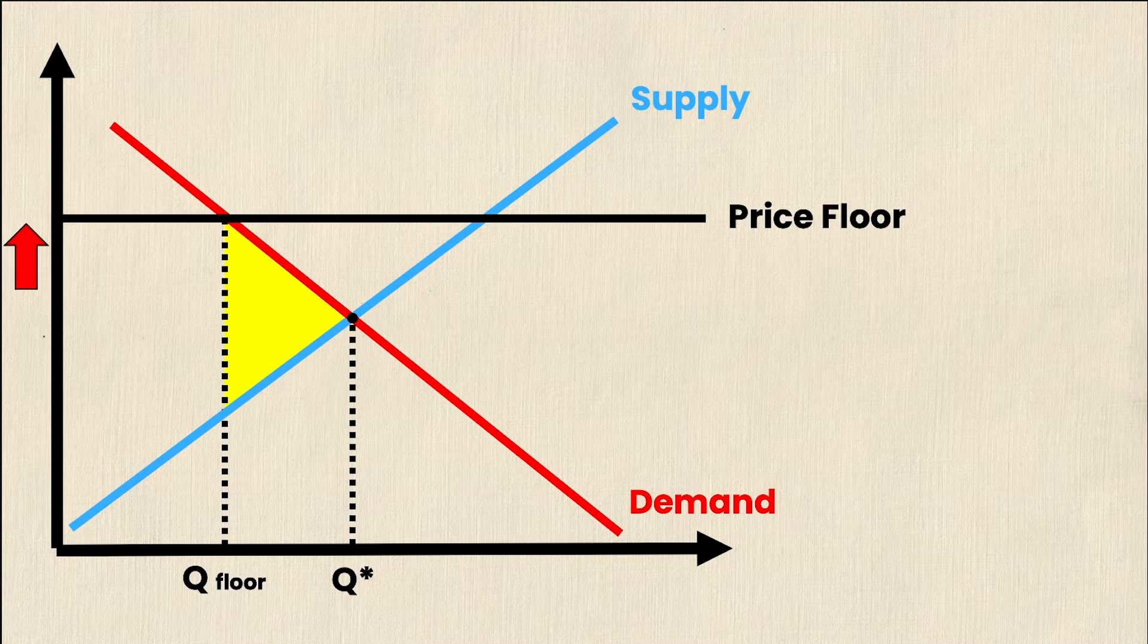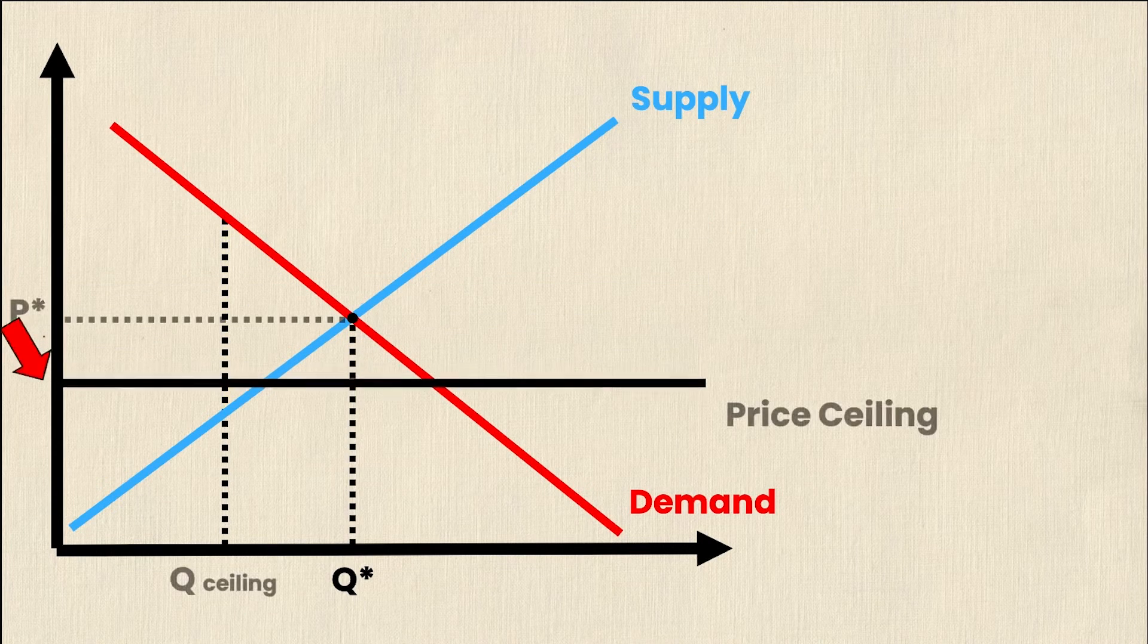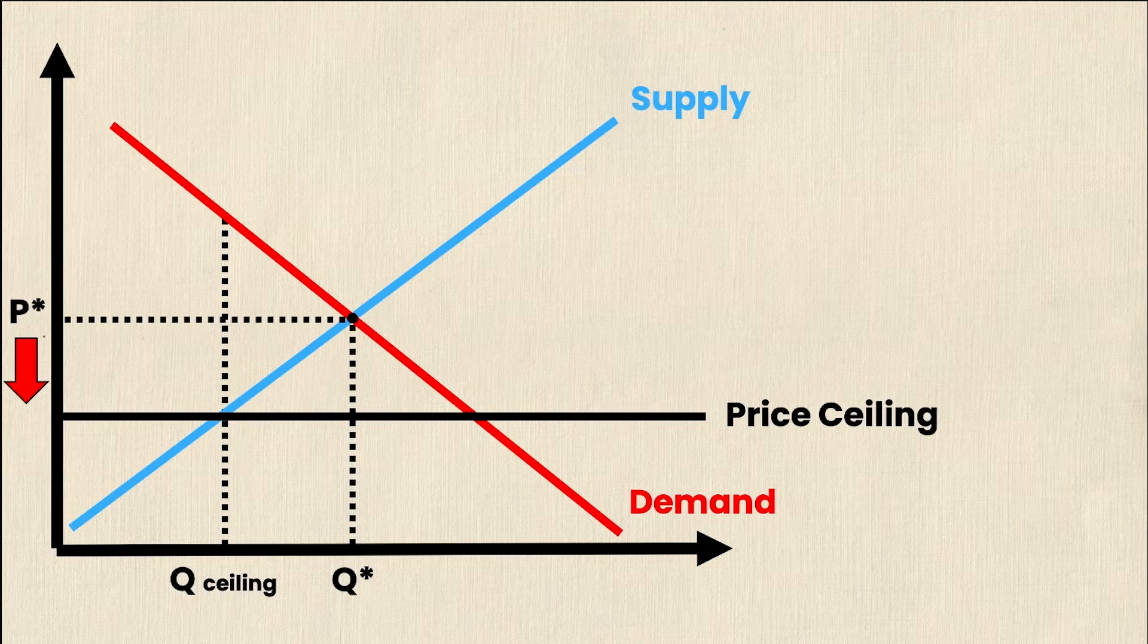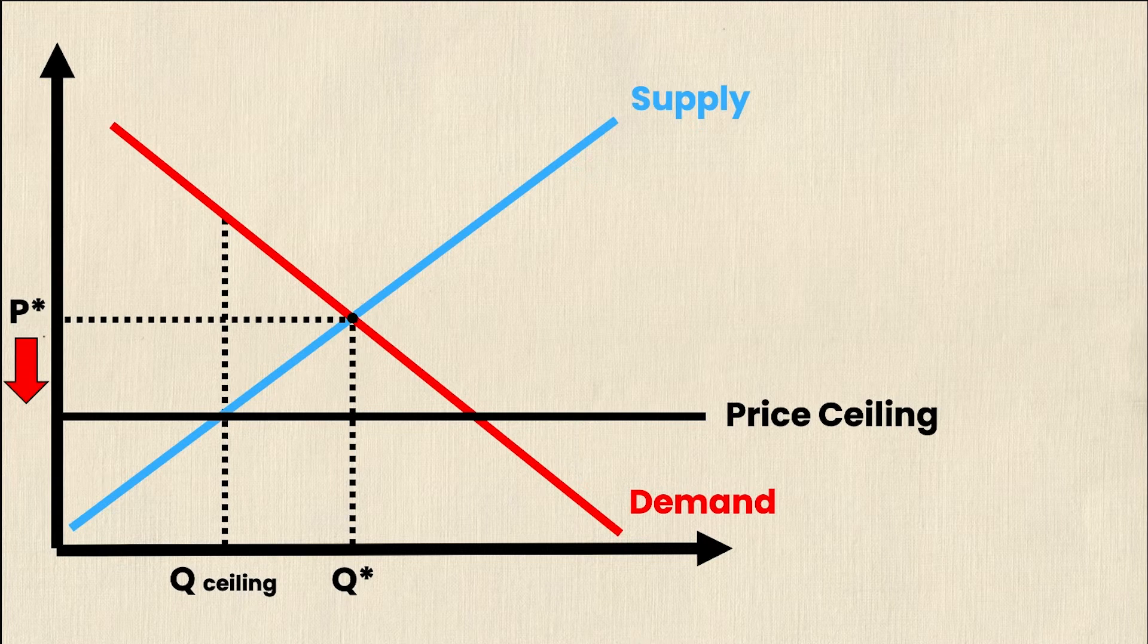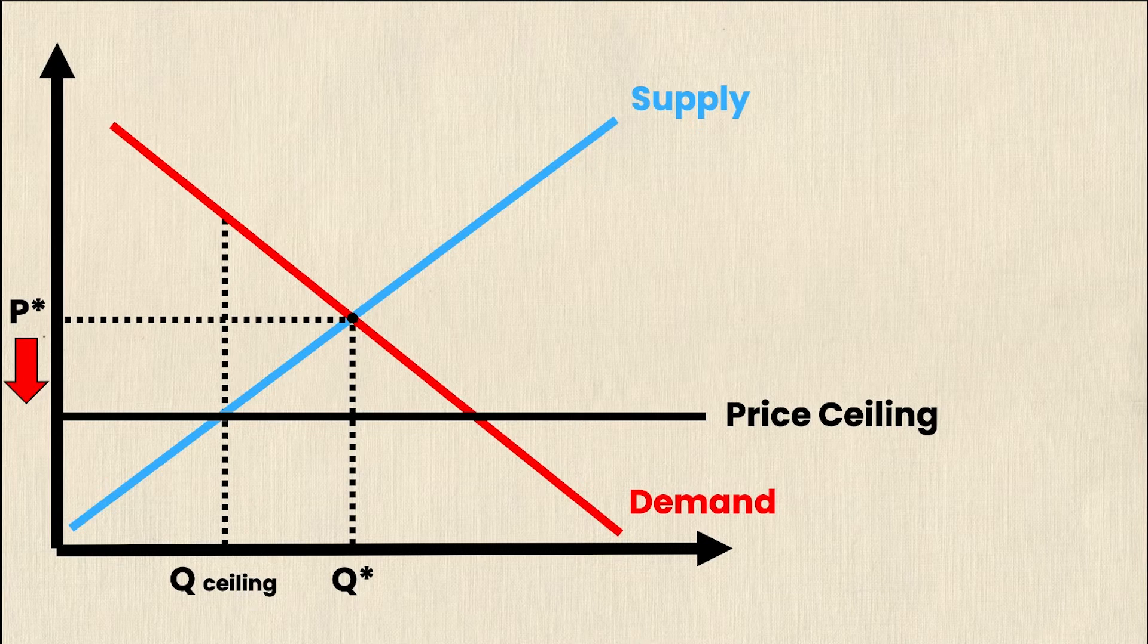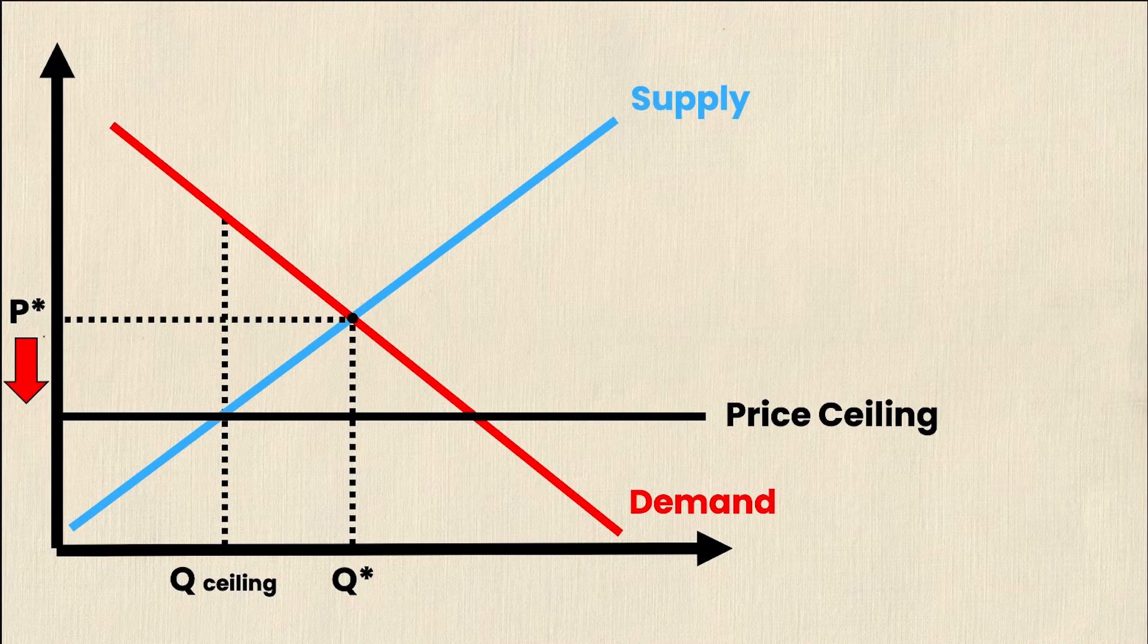On the other hand, if the government believes that the equilibrium price is too high, they can impose something called a price ceiling. Opposite to a price floor, a price ceiling is the maximum price that can be charged for a good. Once again, in order for a price ceiling to be effective, or what economists call binding, the price ceiling must be lower than the equilibrium price.